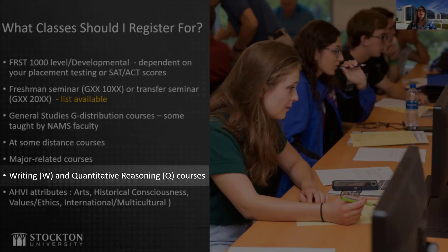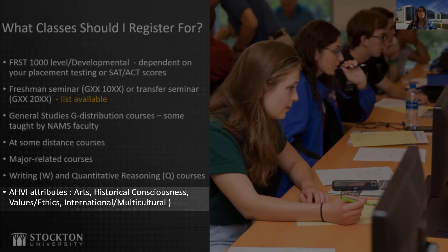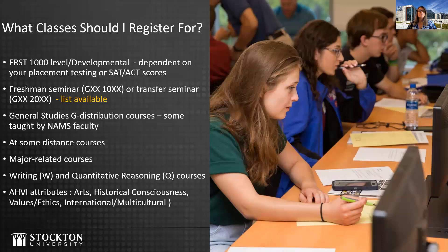Take courses to meet the writing and quantitative reasoning course requirements. If you're a new student, you will need to take a W-1 course or a Q-1 course in your first semester. For NAMS majors, all Q course requirements can be taken within the regular curriculum. Courses that you take to fulfill the requirement of the A, H, B, or I attributes can be double-dipped to also count for program cognate, general studies, at-a-distance, or program cognate course requirements as appropriate.